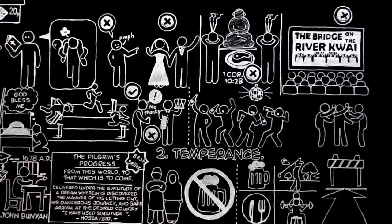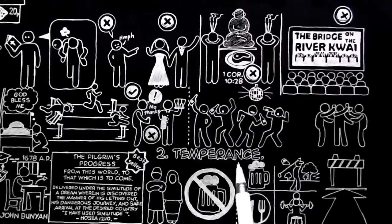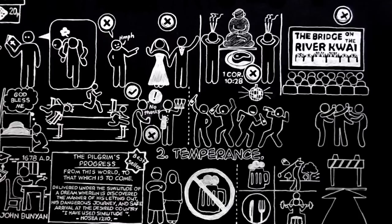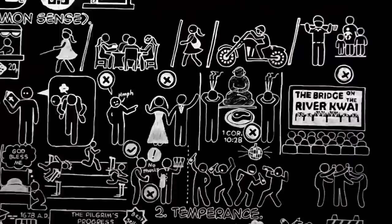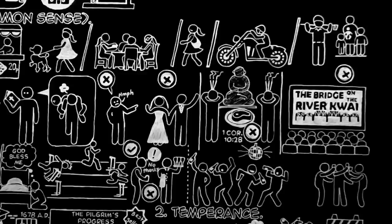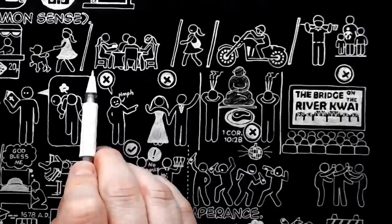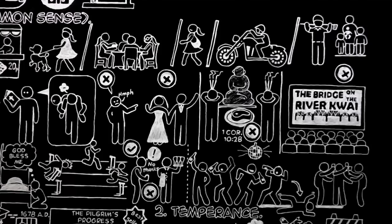One great piece of mischief has been done by the modern restriction of the word temperance to the question of drink. It helps people to forget that you can be just as intemperate about lots of other things. A man who makes his golf or his motor bicycle the centre of his life, or a woman who devotes all her thoughts to clothes or bridge or her dog, is being just as intemperate as someone who gets drunk every evening. Of course, it does not show on the outside so easily. Bridge mania or golf mania do not make you fall down in the middle of the road. But God is not deceived by externals.